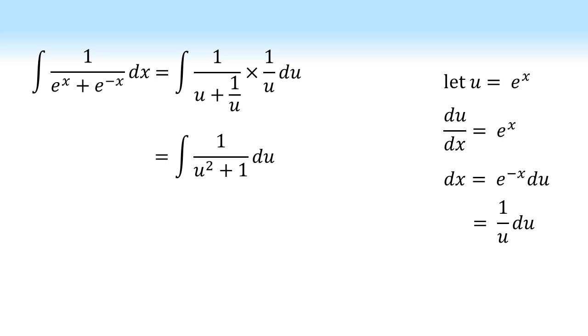Gives us the integral of 1 over u squared plus 1 du. Now this is a slightly tricky one to spot, but this is one we can do by inspection. So 1 over u squared plus 1 is the derivative of the inverse tan of u.